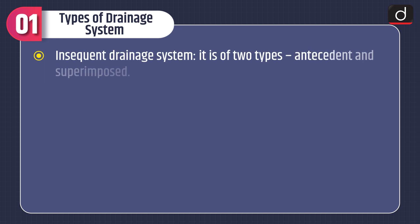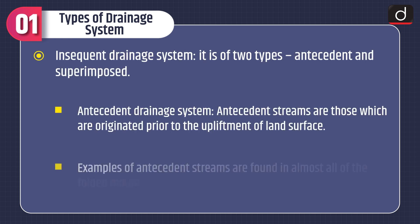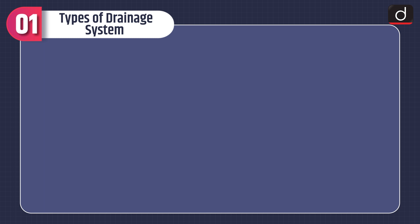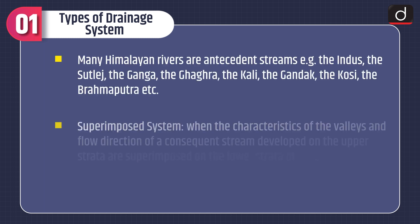The second is the insequent drainage system, which has two types: antecedent and superimposed. Antecedent streams are those which originated prior to the upliftment of the land surface. Examples of antecedent streams are found in almost all of the folded mountains of the world, and many Himalayan rivers are antecedent streams.